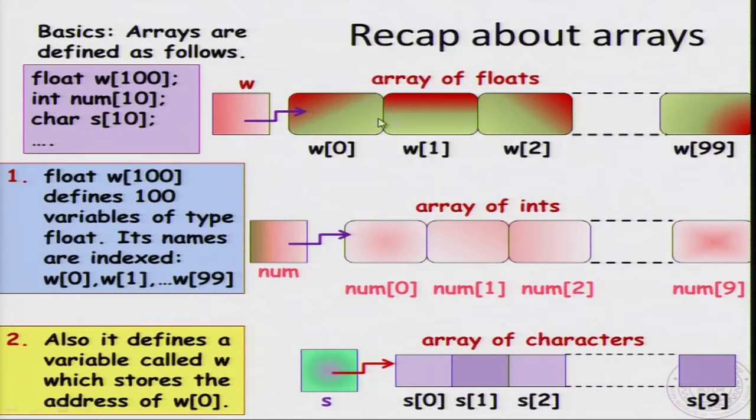Recall that we have defined arrays as follows. If we declare an array float w[100], it will declare an array of 100 floats consecutively allocated in memory. We have also mentioned the fact that there is a separate box w which will point to the first location in the array. It contains the address of the first location. Int num[10] will declare an integer array of 10 integers plus one box which will hold the address of the first location and so on.